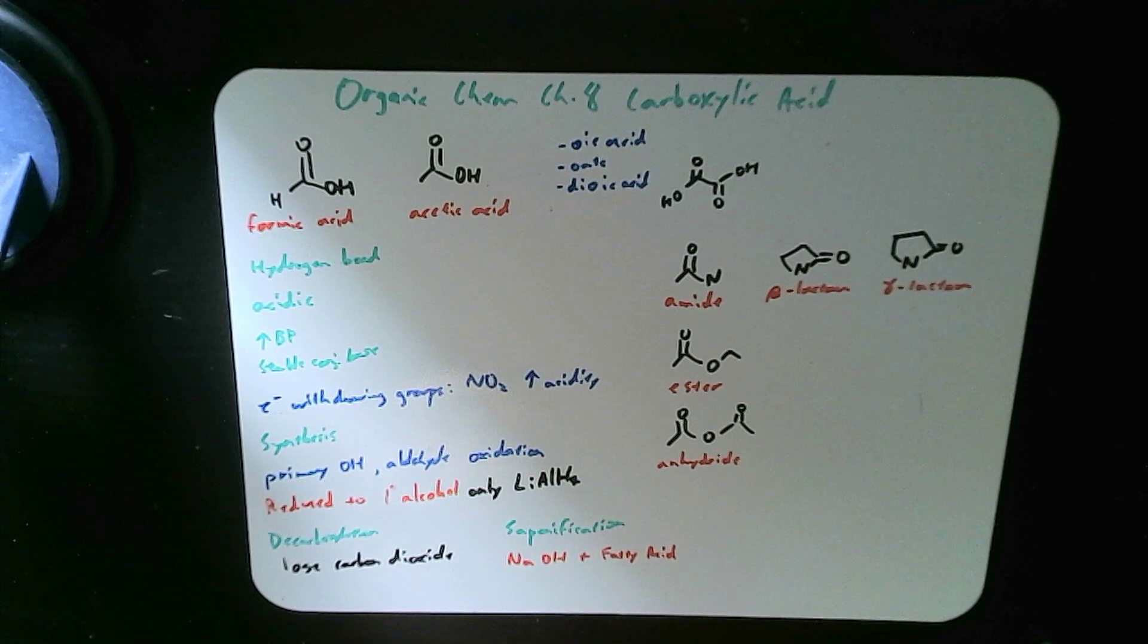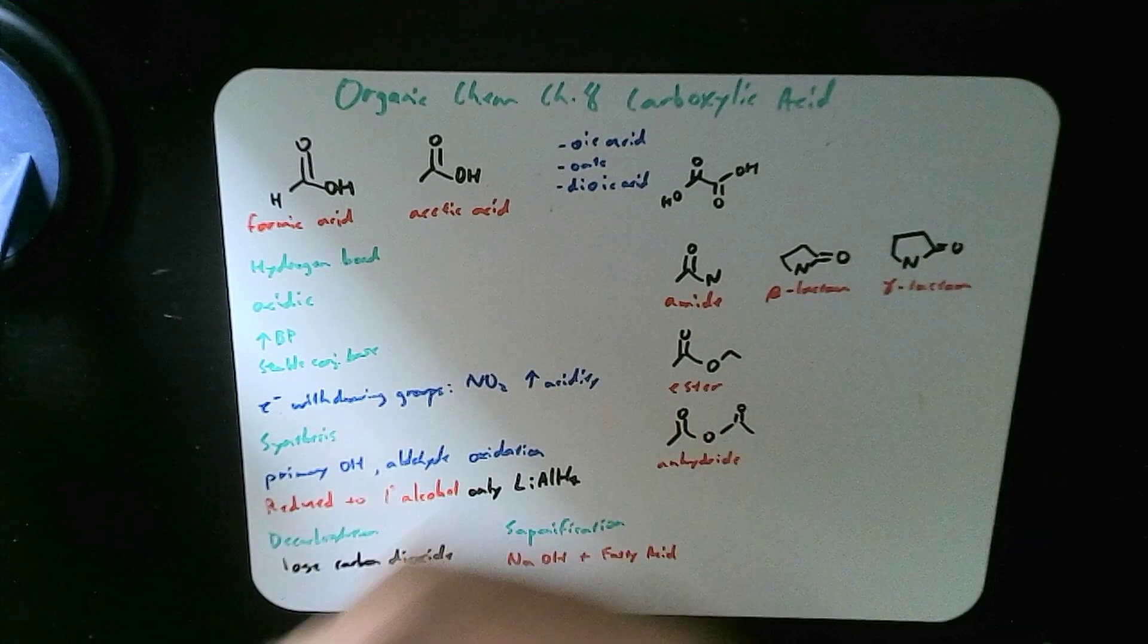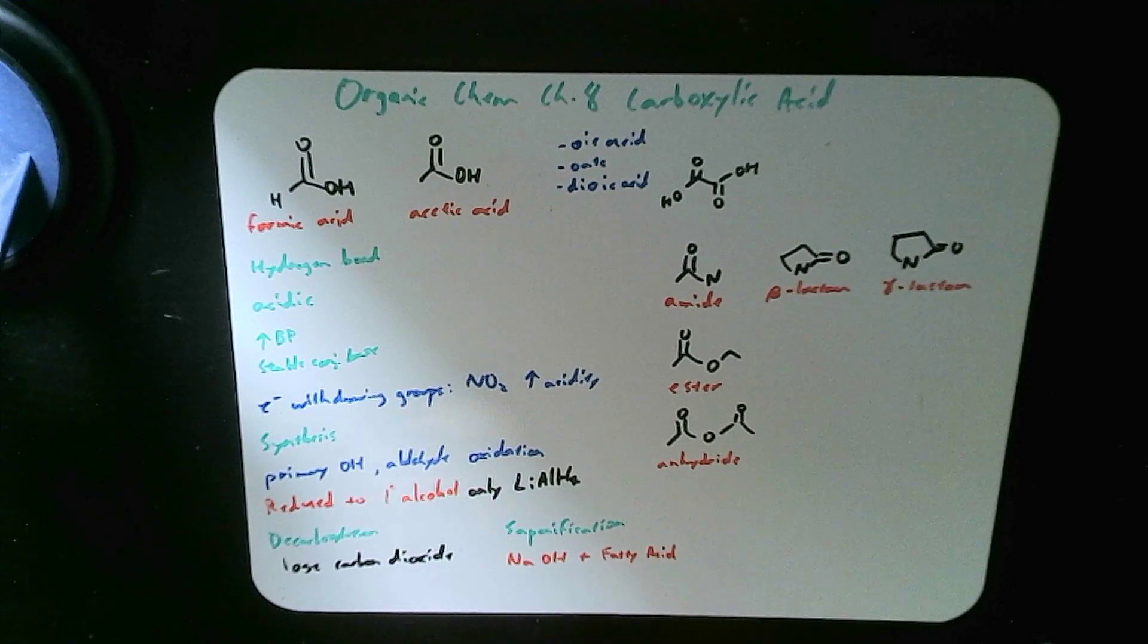However, some groups like NH4, that actually donates the electron density and make it a lot more basic. So what that means is if there's no withdrawing groups like oxygen to help draw away the electrons, you end up with slightly more basic and the conjugate base is not as stable.